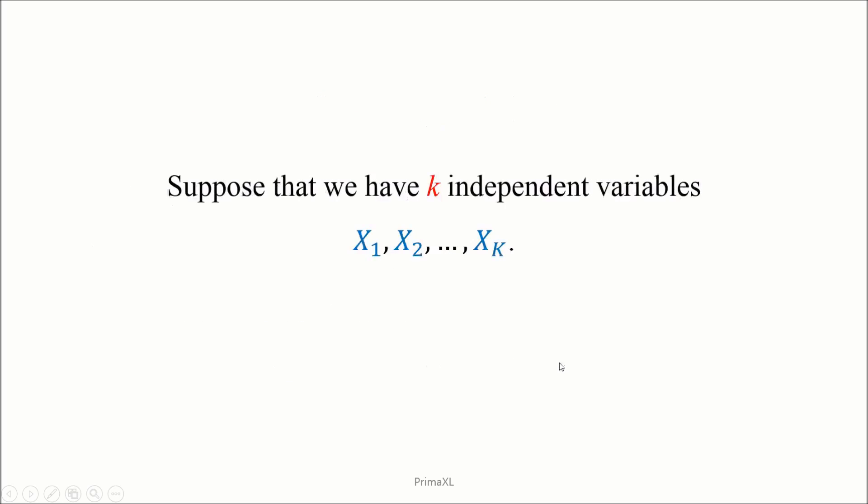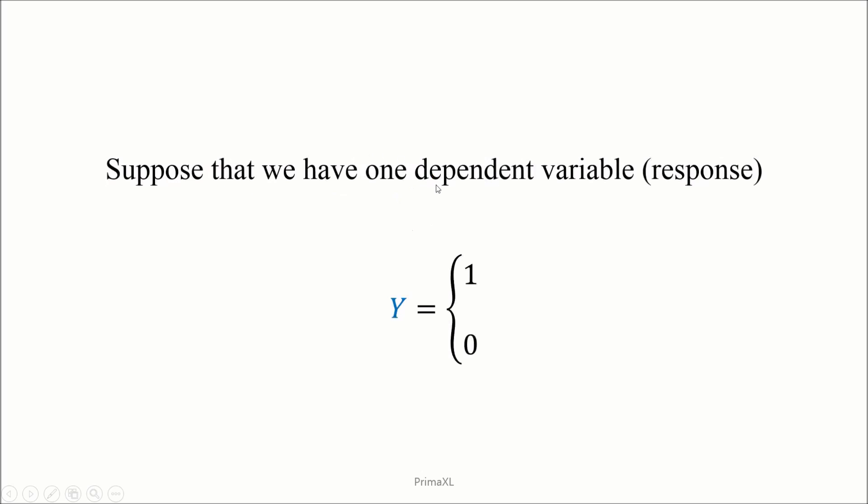Let's suppose that we have k independent variables. They are usually denoted as x1, x2, up to xk. Let's suppose that we have one dependent variable also called the response. It is usually denoted as y. y can be either 1 or 0.